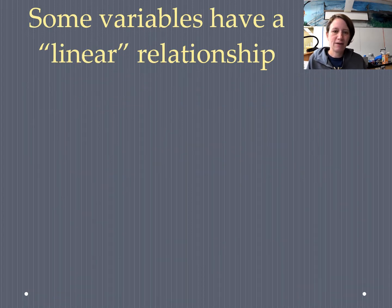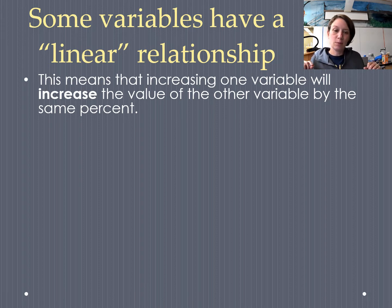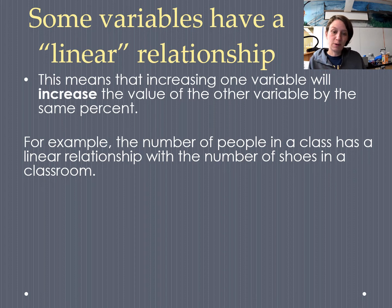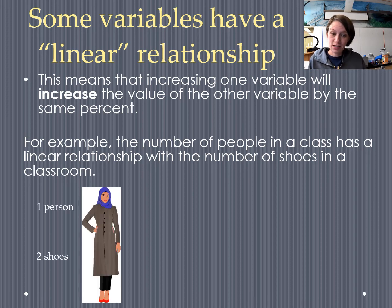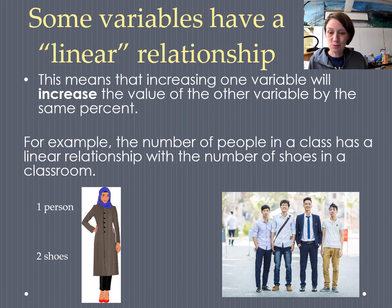Other variables have what's called a linear relationship. Linear relationships mean that increasing one variable is going to cause the other variable to increase by the same percent. An example is the relationship between the number of people in a class and the number of shoes in that classroom. If you have one person, that person has two shoes. If I increase people — say a classroom with four people instead of one — the shoes should go up by the same percent.